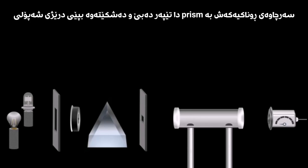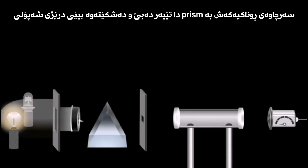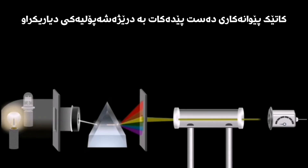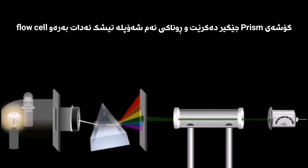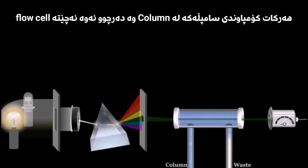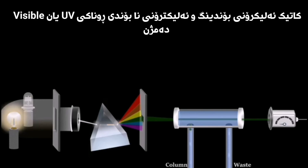Light from the lamp is shone onto the prism and dispersed according to wavelength. When the measurement is performed with a specific wavelength, the angle of the prism is adjusted so that the light of this wavelength can shine on the flow cell. As the compounds elute from the column, they enter the flow cell, where the bonding and non-bonding electrons of these compounds can absorb energy in the form of ultraviolet or visible light.